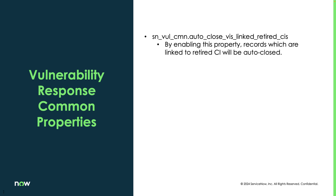The next one covers vulnerability response common properties — specifically auto-close VIs that are linked to a retired CI. So if somebody comes in and retires a CI, setting that install status or operational status to retired, it's going to go ahead and close all the associated VITs. This is highly reliant on the customer's processes and whether they're actually retiring CIs and using that field. There's another property linked to this that we'll talk about in how everything works together.